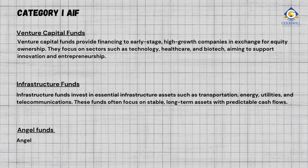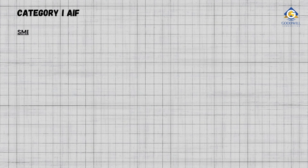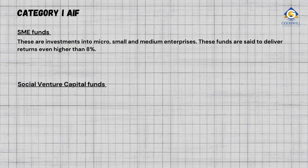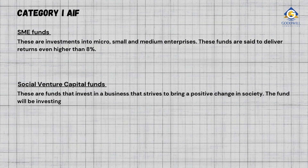Angel Funds: Angel investors invest in a startup in its earliest stage and guide the management in the right path. SME Funds are investments into micro, small, and medium enterprises, and are said to deliver returns even higher than 8%. Social Venture Capital Funds invest in businesses that strive to bring a positive change in society, with a minimum of 75% of assets invested in such businesses.